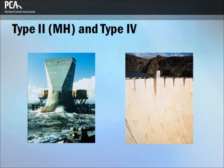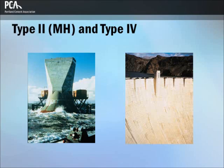Type 2MH and Type 4 cements are manufactured to generate heat at a slower rate than most other cements. Moderate heat and low heat cements minimize heat generation in massive elements or structures, such as very thick bridge supports and dams. Hoover Dam used a Type 4 cement to control temperature rise. Type 4 cements are not commonly manufactured in North America, as there are other more economical measures for controlling heat rise in concrete.